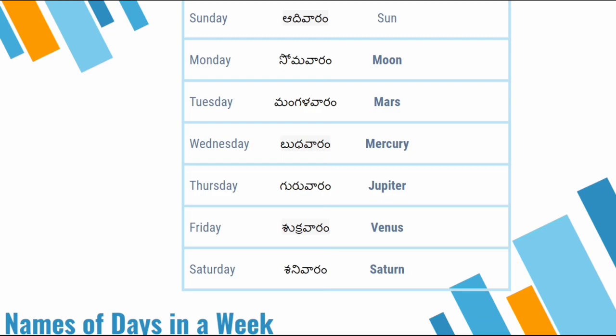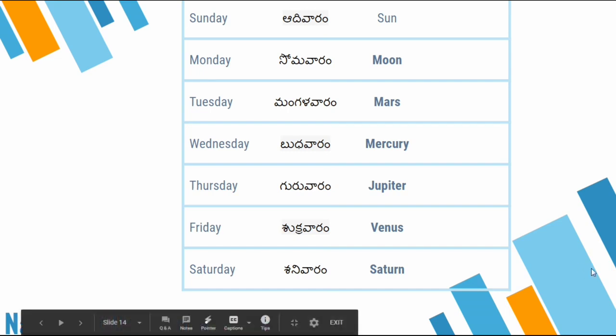Sunday indicates the Sun, Monday indicates the Moon, Tuesday indicates Mars, Wednesday indicates Mercury, Thursday indicates Jupiter, Friday indicates Venus, and Saturday indicates Saturn. Even in Telugu, you can observe the same names of the planets in the names of the days of the week. But the puzzle behind the order of days in a week according to their names is not clarified yet. Let us hope that astronomers of today will solve the equation soon.